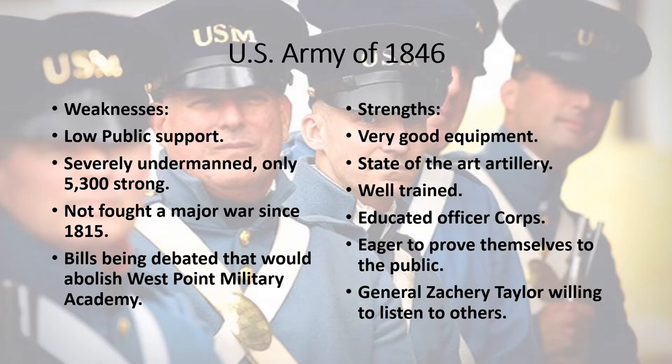In 1846, the American public was very critical of a regular army, preferring militias, and the United States army was under strength at a mere 5,300 men. Not only were they under strength, the U.S. army had not fought a major war since the early months of 1815. Politically, it was under attack, with a bill being debated to abolish West Point, which was seen as elitist. However, the equipment of these soldiers was in good condition. Their artillery was state of the art, and their training was favorable to those of European armies, according to foreign veterans who served in the ranks. Their officer corps was trained at West Point in the newest methods of warfare. The political attacks on the military helped give a drive to the men and officers to do well and prove they were necessary.